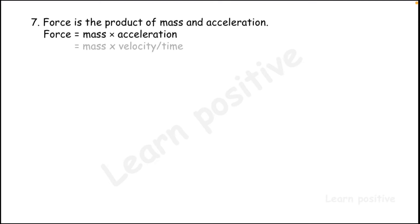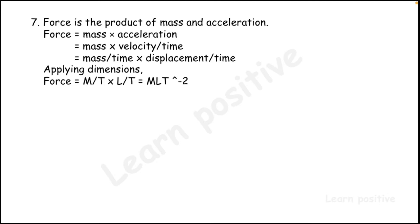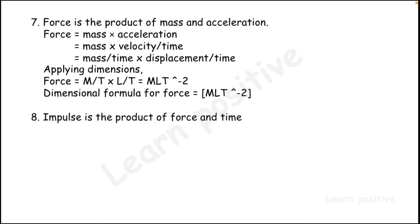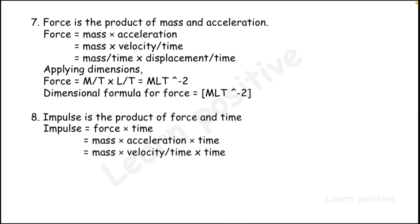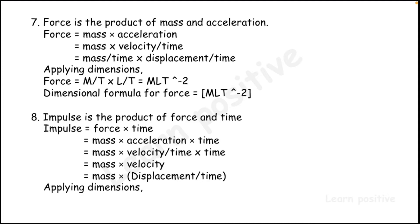Force is mass × acceleration. Using velocity divided by time for acceleration and displacement divided by time for velocity, we get M × L × T⁻², so the dimensional formula of force is M·L·T⁻². Impulse is force × time. The time in multiplication and division cancel, leaving mass × velocity, so the dimensional formula of impulse is M·L·T⁻¹.